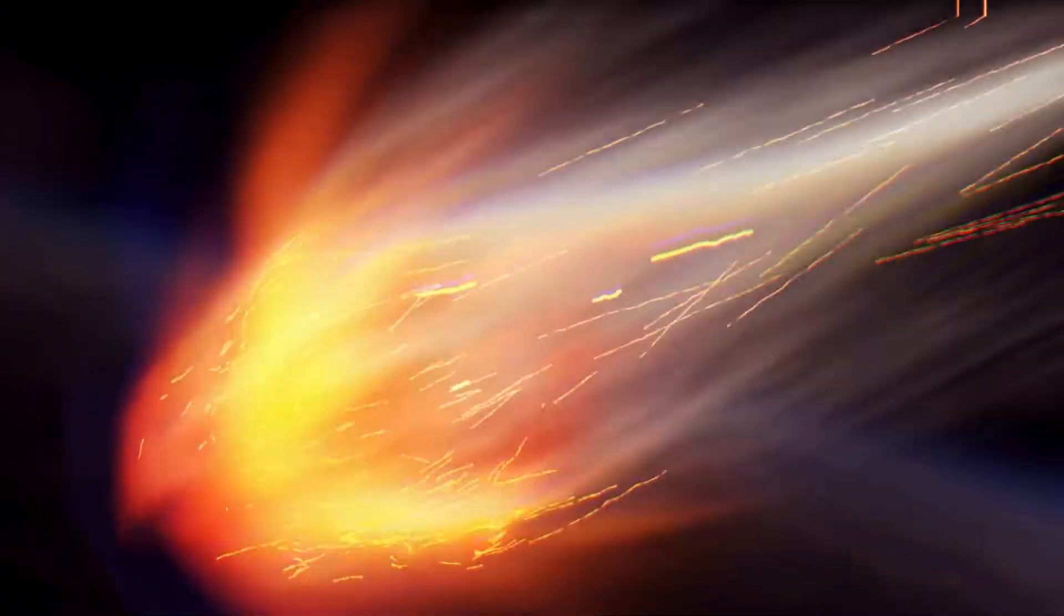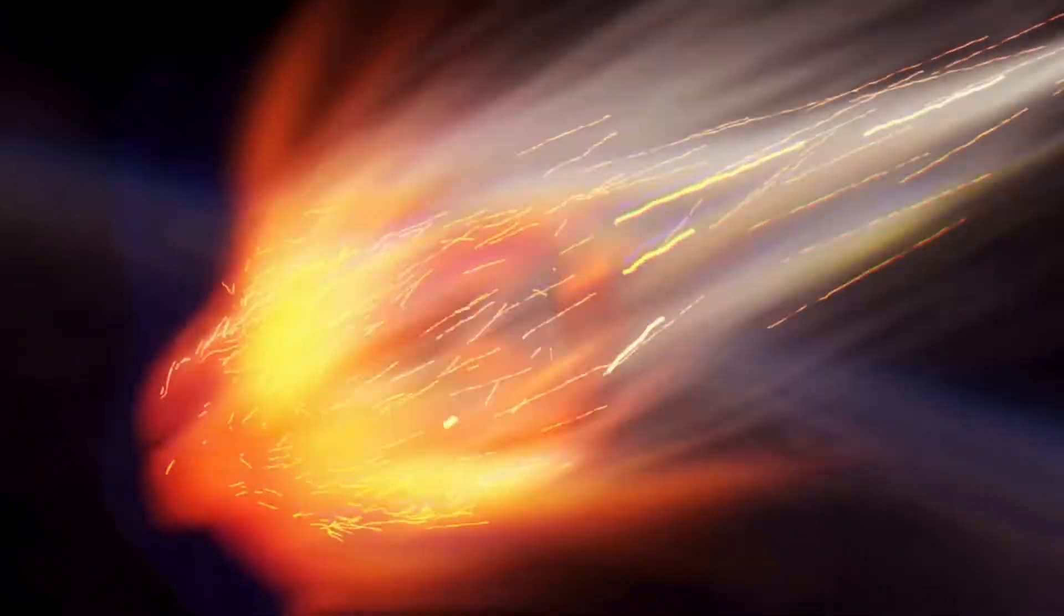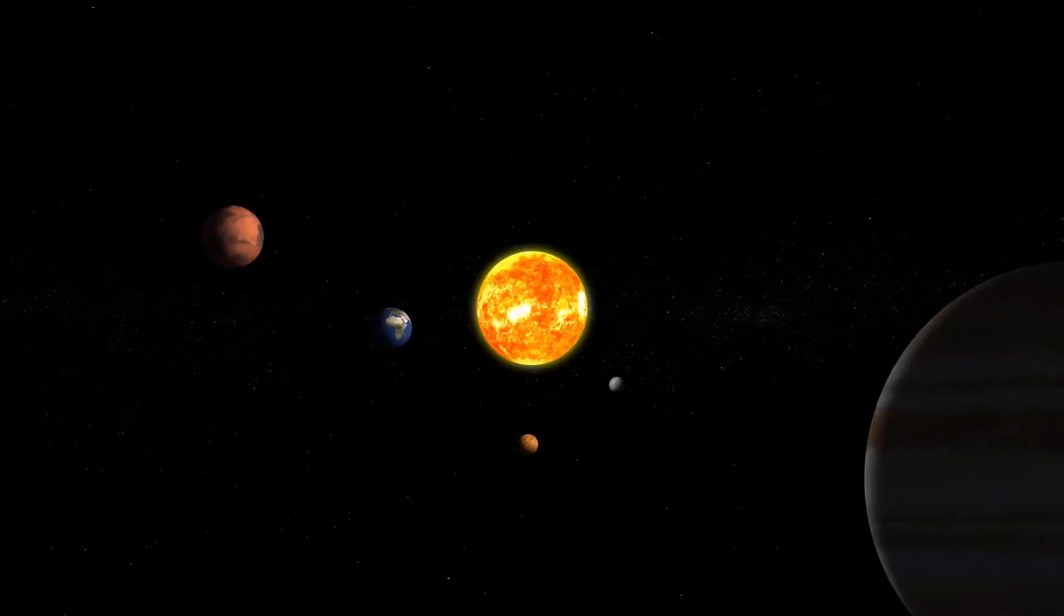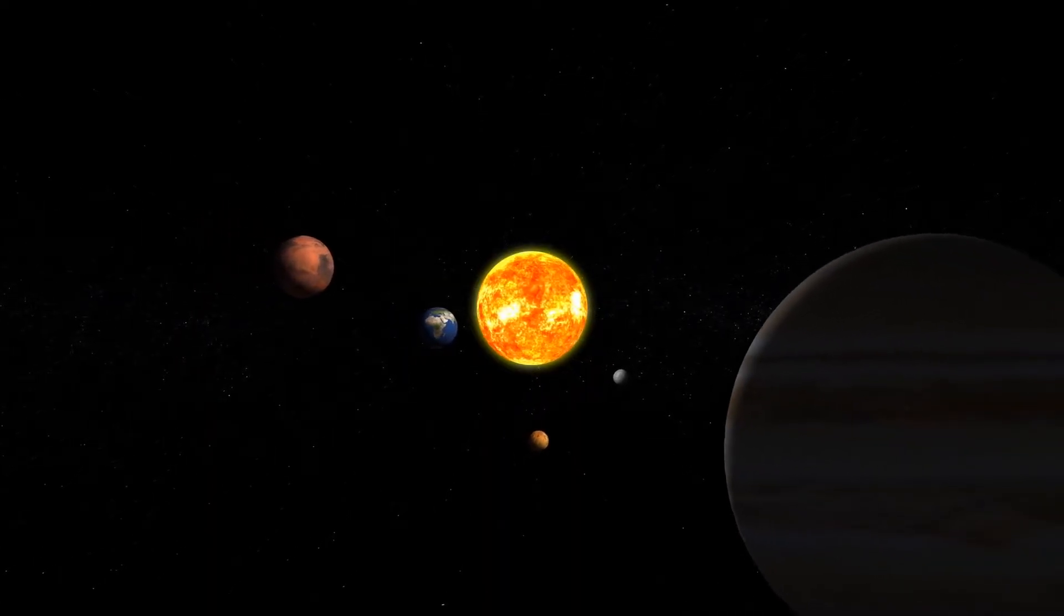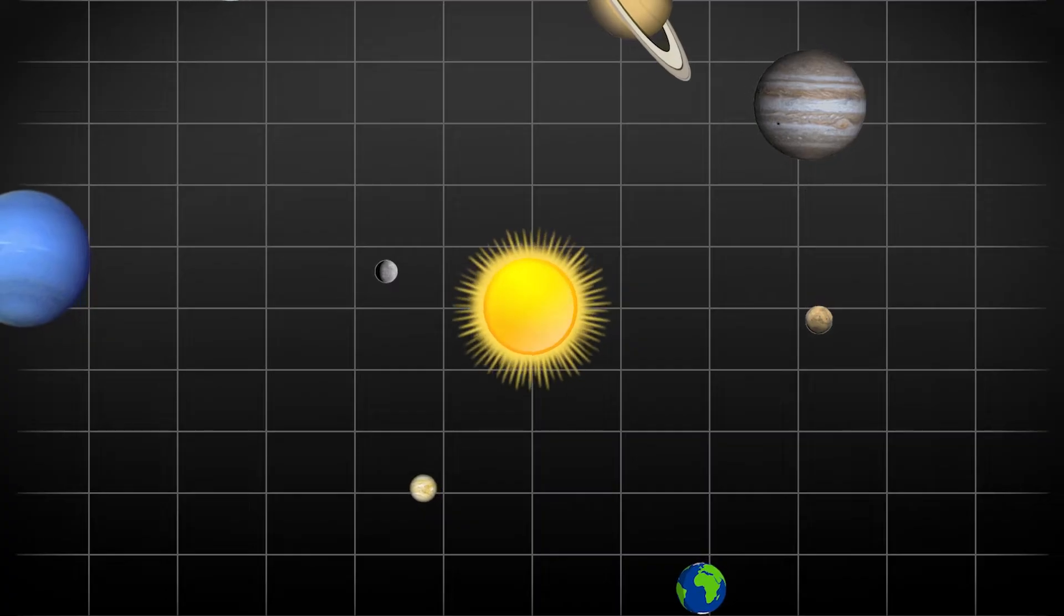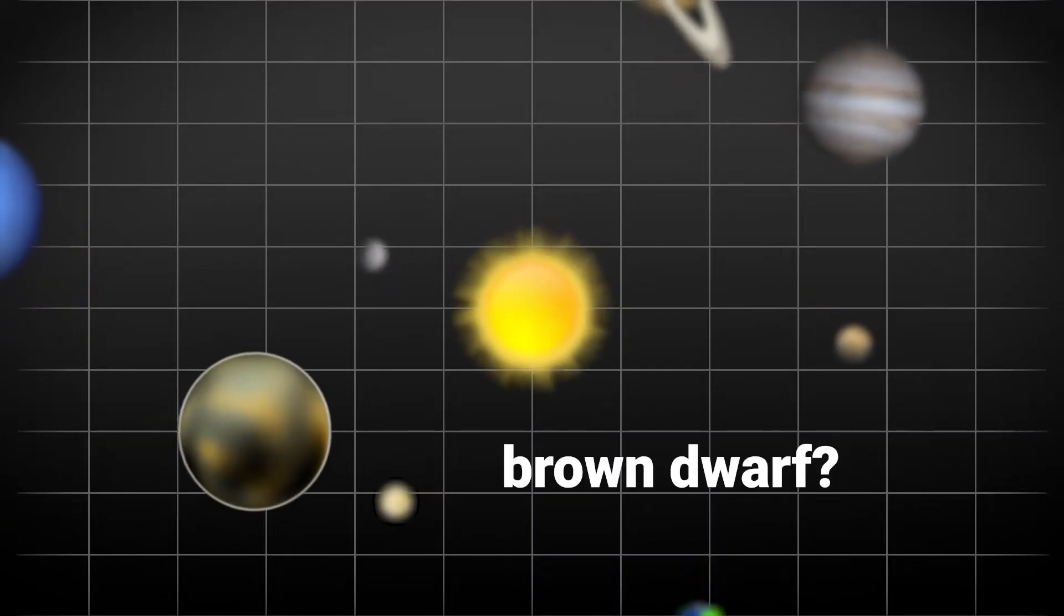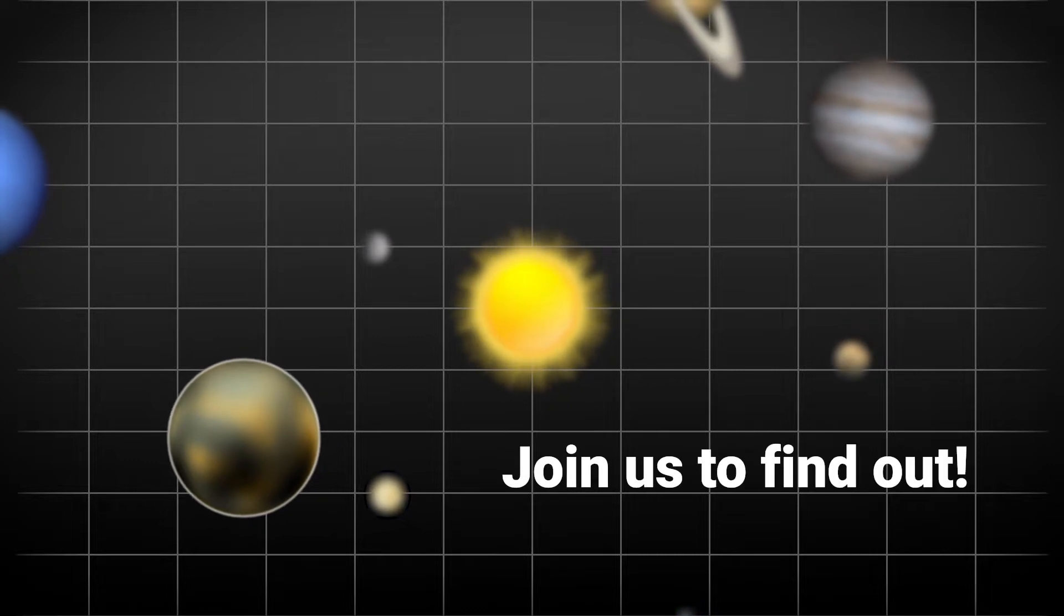But what would happen if one day some unexpected event or an object from interstellar space entered our solar system and caused one of the planets to fall out of orbit? What would happen if the planets fell out of their orbit due to the influence of a brown dwarf?